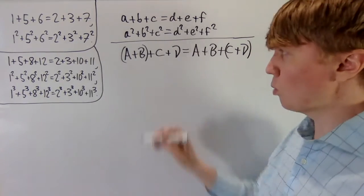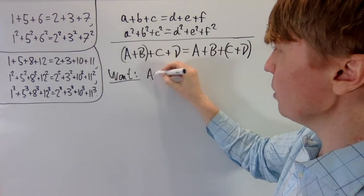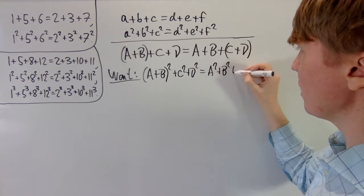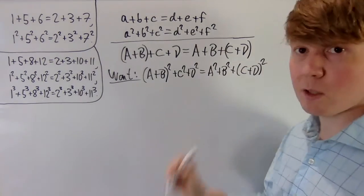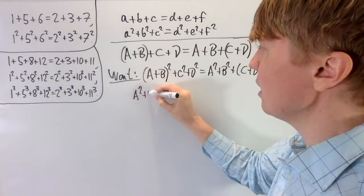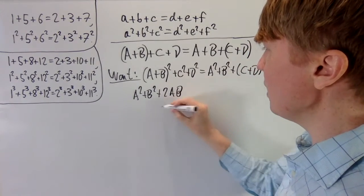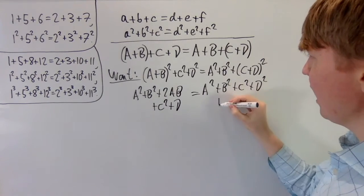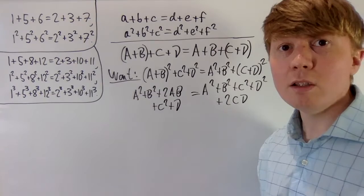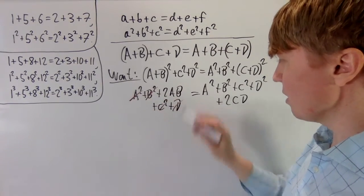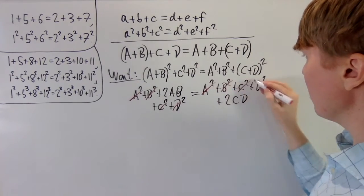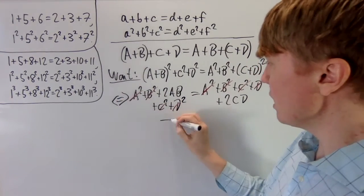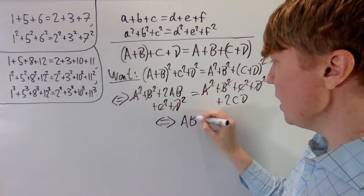Now we want the sum of squares to be equal: (a+b)² + c² + d² equals a² + b² + (c+d)². Expanding the brackets gives a² + b² + 2ab + c² + d² on the left, and a² + b² + c² + d² + 2cd on the right. The squared terms all cancel, so the condition reduces to 2ab equals 2cd, or simply ab equals cd.